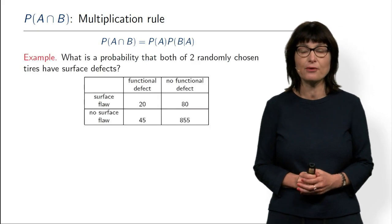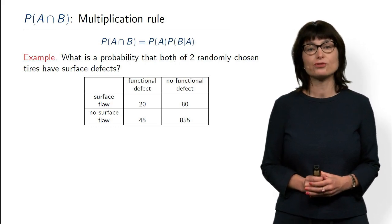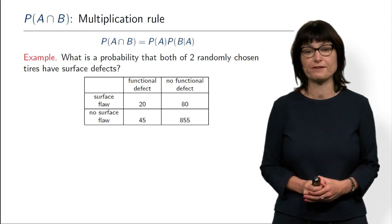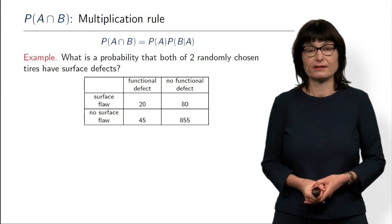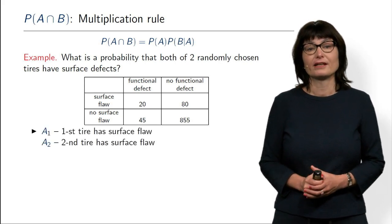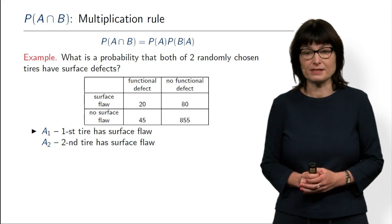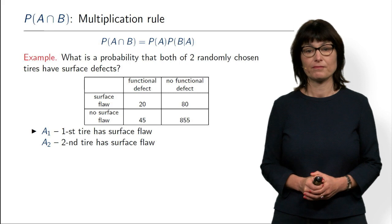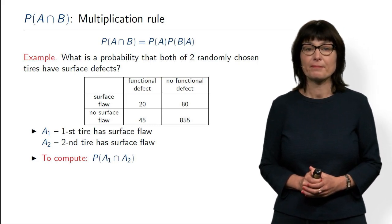This is the formula again, using our tires again. Assume that we randomly choose two tires. What is the probability that both of these tires have a surface defect? To compute any probability, it is advisable to express it in terms of well-defined events. The most natural way is to define events A1 and A2, where A1 means the first tire has a surface flaw and A2 means the second tire has a surface flaw. Then what we need to compute is the probability of the intersection of A1 and A2, which we compute by the multiplication rule.